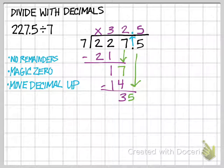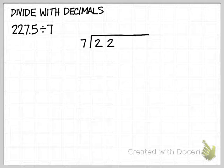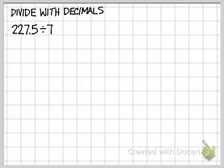Okay, now we're going to try a division problem using decimals. The original problem is 227.5 divided by 7, so I'm going to go ahead and rewrite it.